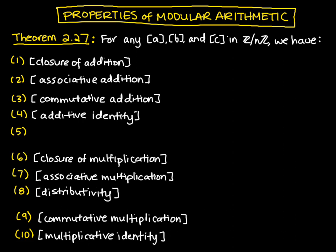The first one is that we have closure of addition. So that means that if a is in Z mod nZ and b is in Z mod nZ, then a plus b is also in there. So for the sake of space, let me just write this a little bit differently. If a and b are in Z mod nZ, then a plus b is in it.